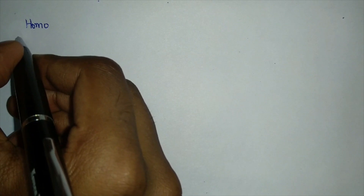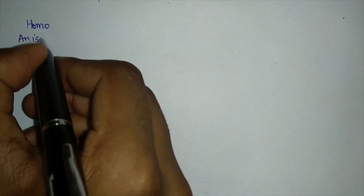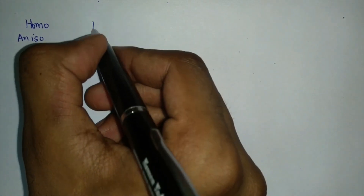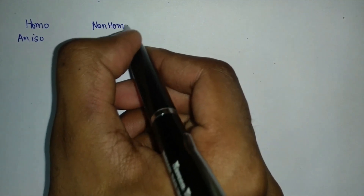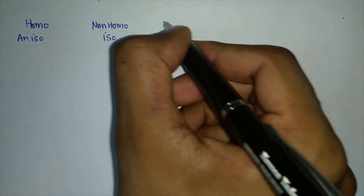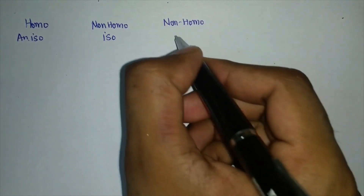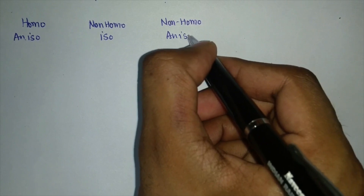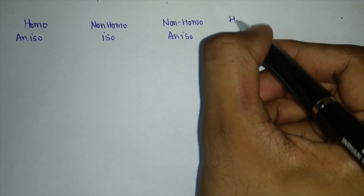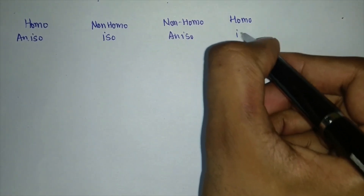Since there are two natures, there can be four different combinations. An object can be: homogeneous but anisotropic; non-homogeneous but isotropic; non-homogeneous and anisotropic (also called heterogeneous and anisotropic); or homogeneous as well as isotropic in nature.